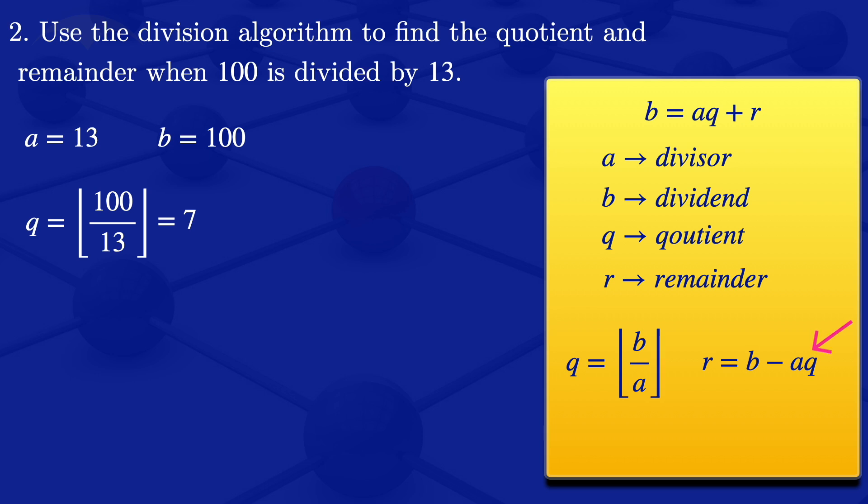And the values of the A, the B and the Q that we have, so that we have our remainder there would be 100 minus 13 times 7, which will simplify to 9. So what we are having there is the quotient is 7 and the remainder is 9.